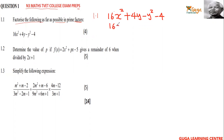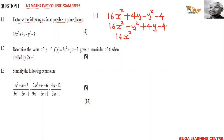Let's rearrange: 16x² — this one doesn't have a friend — then minus y², and we take this one and then plus 4y minus 4. So here we're left with 16x², and we take out the common factor.